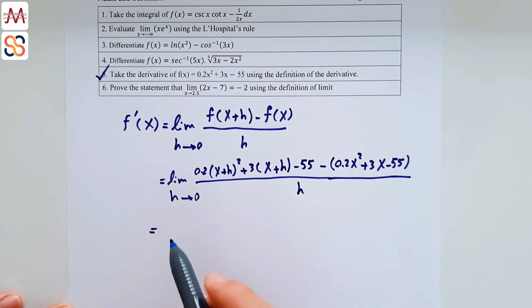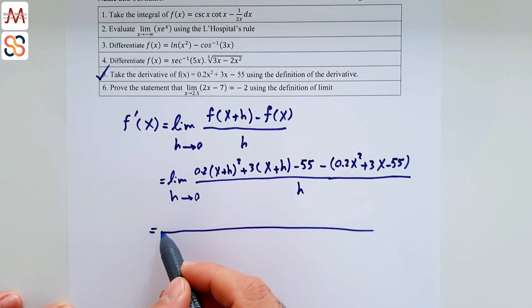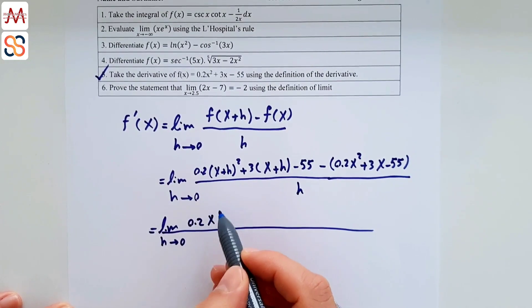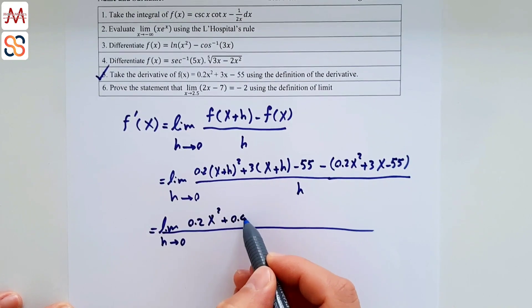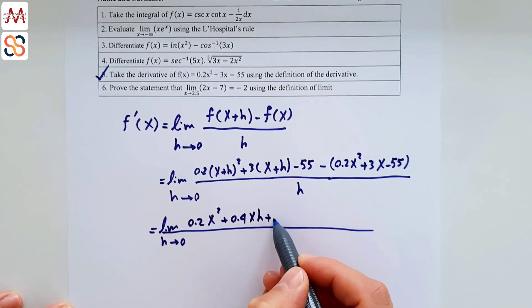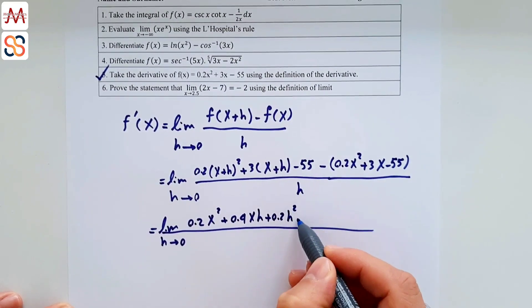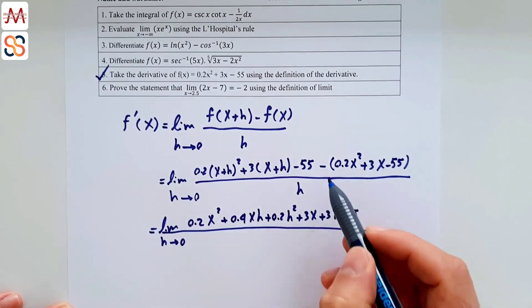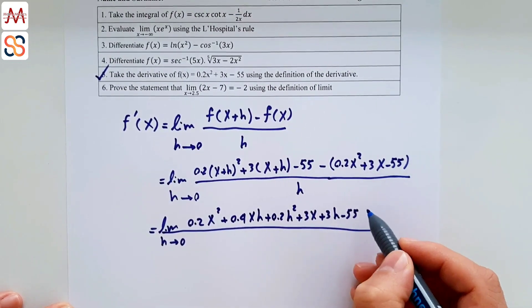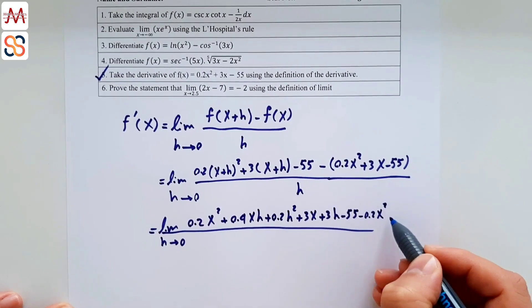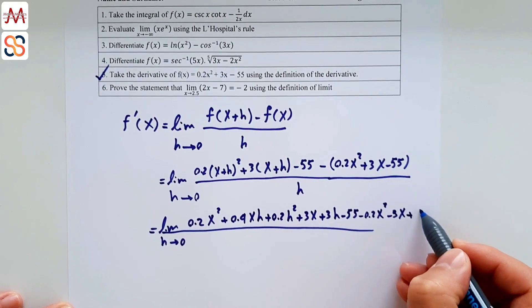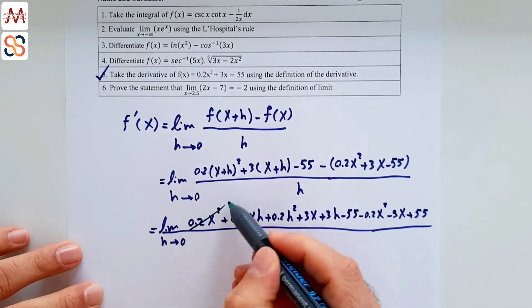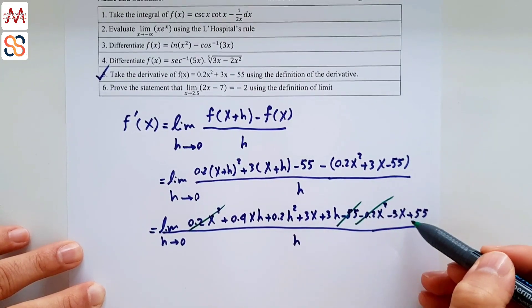Expanding: distribute 0.2 to get 0.2x² + 0.4xh + 0.2h² + 3x + 3h - 55, then subtract the original function giving -0.2x² - 3x + 55, all over h.